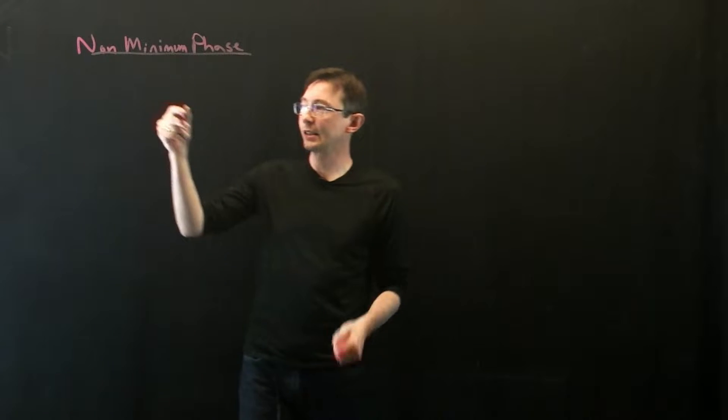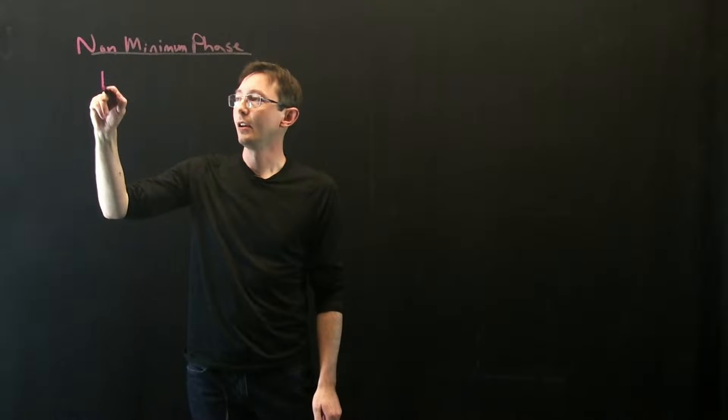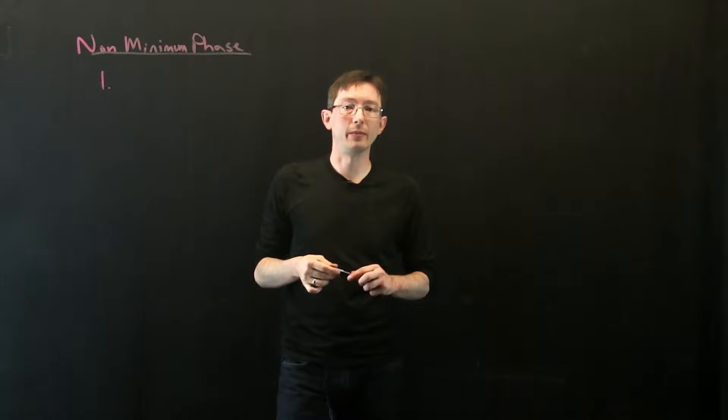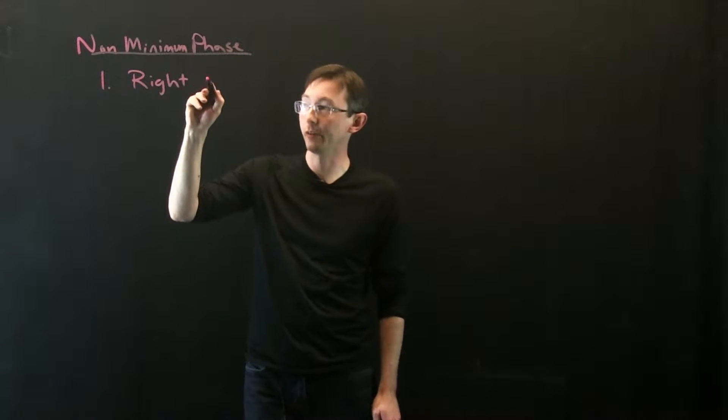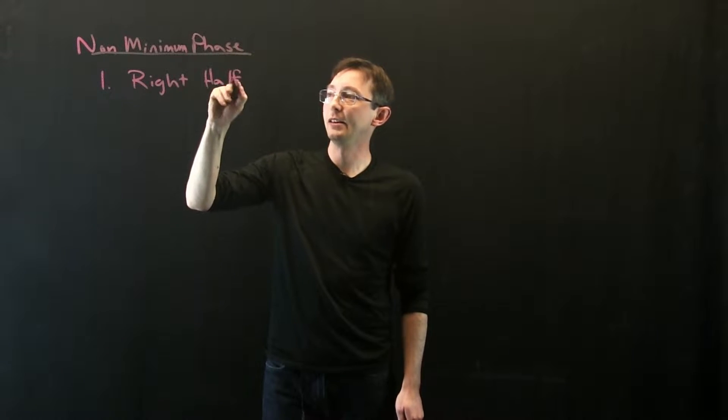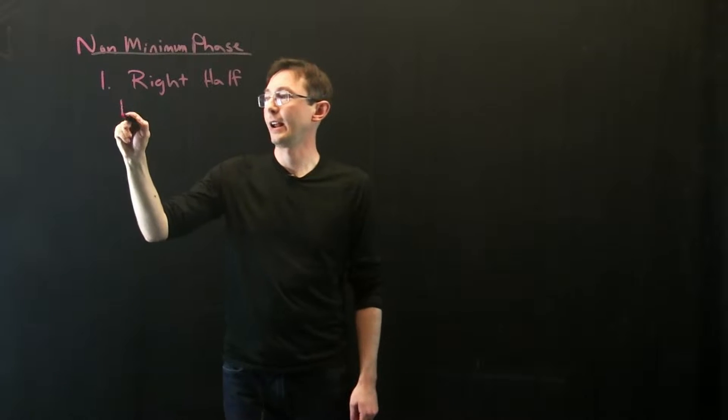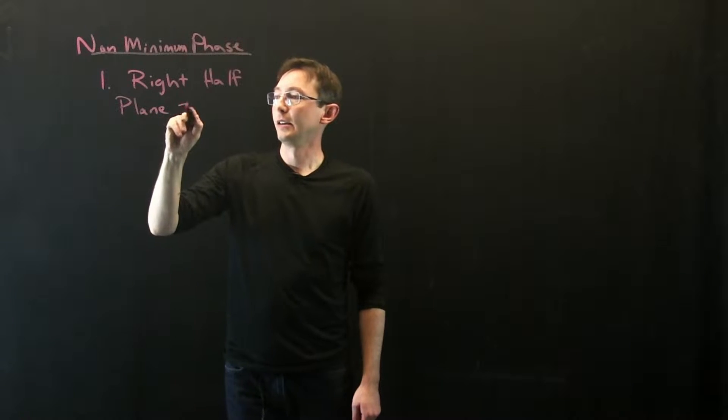So basically, the kind of first thing I think of for non-minimum phase is that I have a right half plane zero. So I have a zero of my transfer function, a right half plane zero.